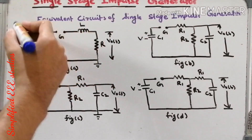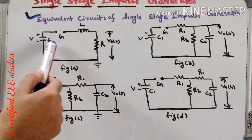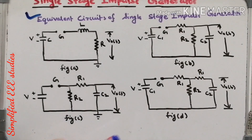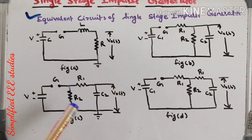Now let us discuss equivalent circuits of the single stage impulse generator. There are different equivalent circuits. Figure A is one type of RLC circuit. Figure B is another type of RLC combination. Figure C and figure D also belong to RLC combinations. Depending on the wave shape, you can arrange different types of circuits helpful for generating impulse waveforms. Based on your requirement, you select what kind of impulse generator is required, rig up the circuit, and generate the impulse waveforms.